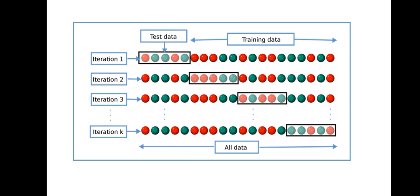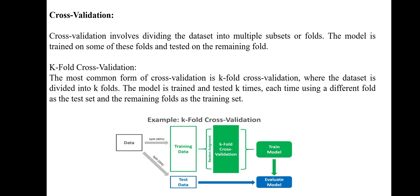Cross-validation involves dividing the dataset into multiple subsets or folds. The model is trained on some of these folds and tested on the remaining fold. For a particular fold, the first fold is selected, the data is trained, and then it is checked against the remaining data folds.